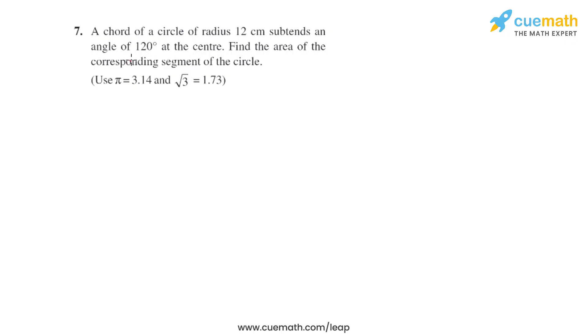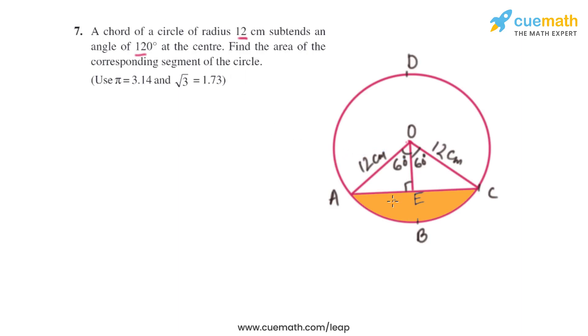Question 7 of this exercise: A chord of a circle of radius 12 centimeters subtends an angle of 120 degrees at the center. Find the area of the corresponding segment of the circle.